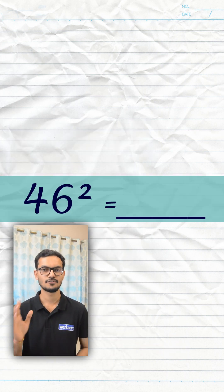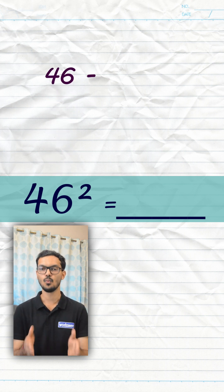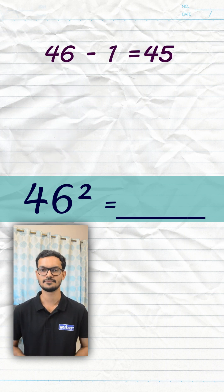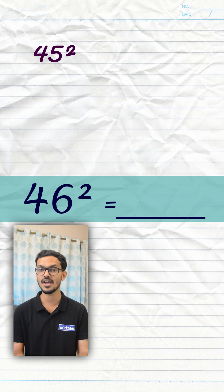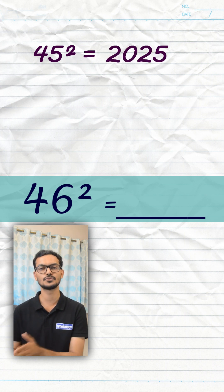Let's take an example. 46 square. First subtract 1 from 46, we get 45. Now find 45 square, which is equal to 2025.